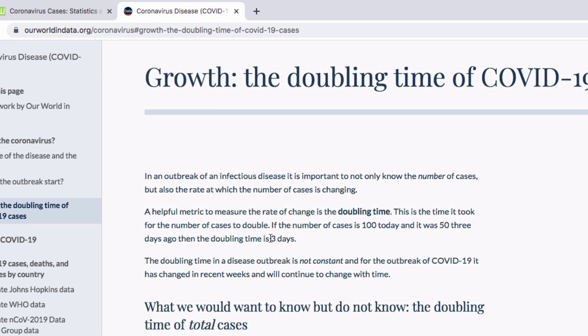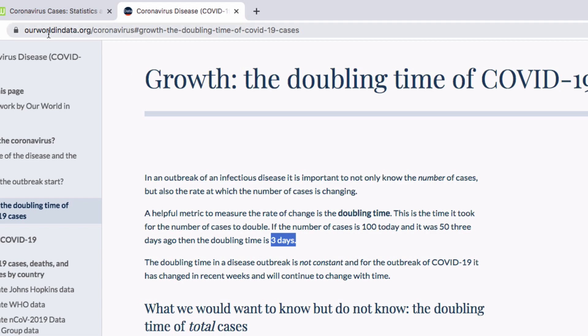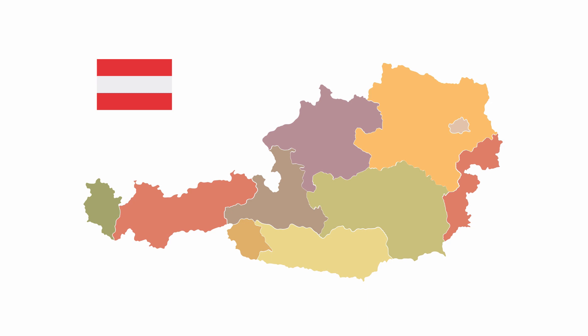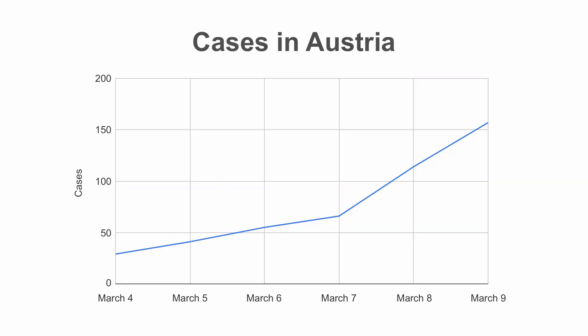Here we see a number of three days on ourworldindata.org. Let me show you what you can do in order to assess the likely scenario that's going to occur in your area, in your city, in your state, based on the example of Austria — the country I live in. It's a small country of 8.8 million inhabitants.